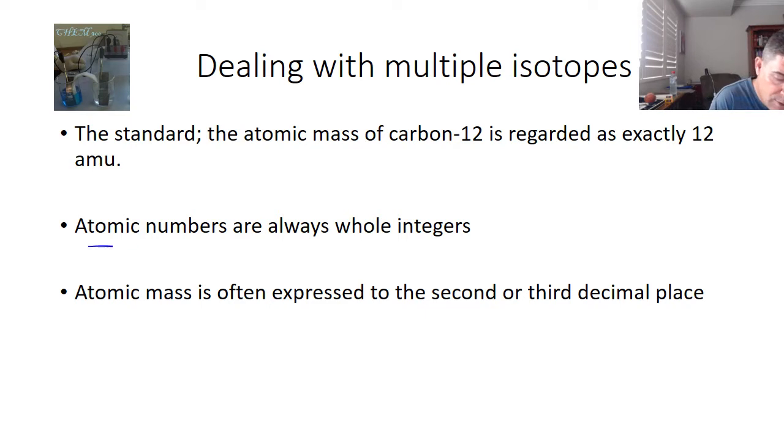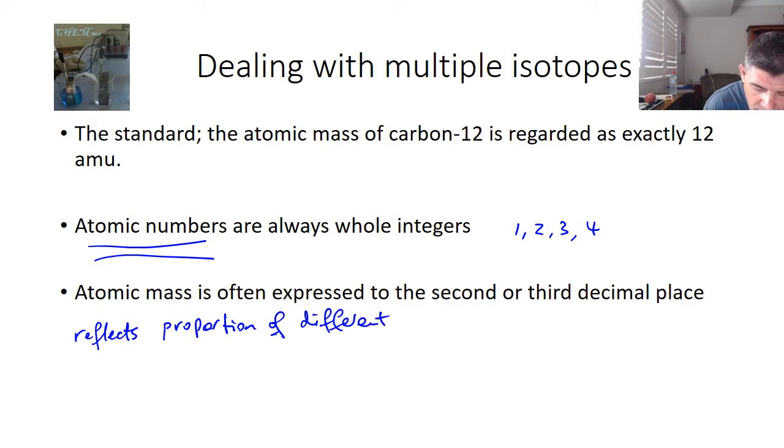So whilst atomic numbers are always expressed as whole integers, hydrogen, helium, lithium, beryllium and so on, the atomic mass can come down to the second or third decimal place. And this is because it is a value that reflects the proportion of different isotopes.